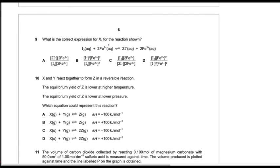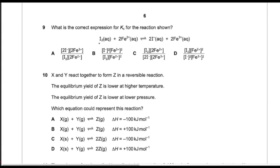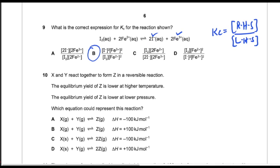Question number nine. What is the correct expression for Kc? Kc equals the concentration of products divided by the concentration of reactants. On the right-hand side are iodide and iron 3+, with 2 moles of each, so these go in the exponent form as squares. On the left-hand side is I2 with 1 mole and iron 2+ with 2 moles. Option B is correct.